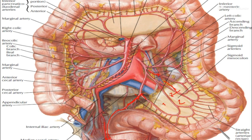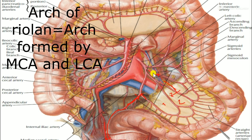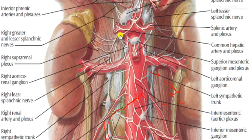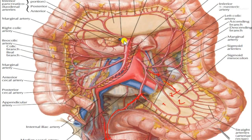We also need to study the arc of Riolan. This arc is formed by the anastomosis between the middle colic artery and the ascending branch of the left colic artery. This connection is known as the arc of Riolan.